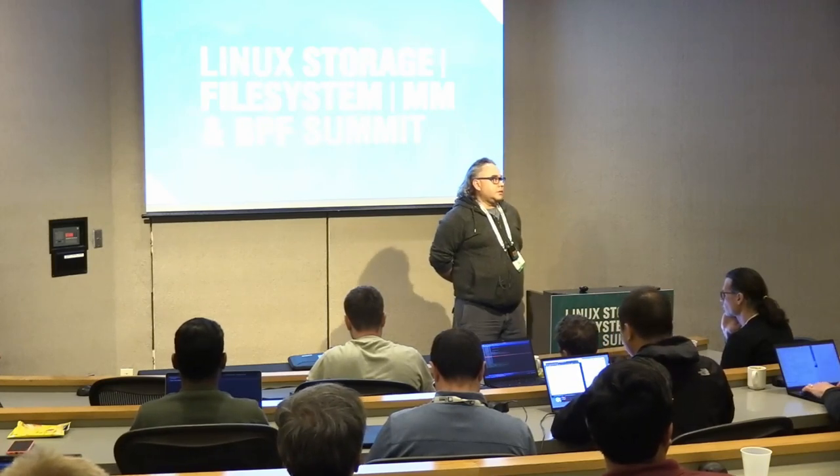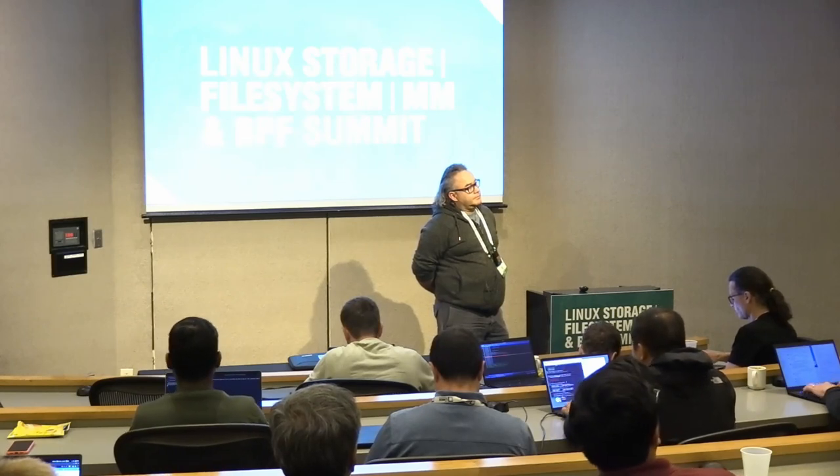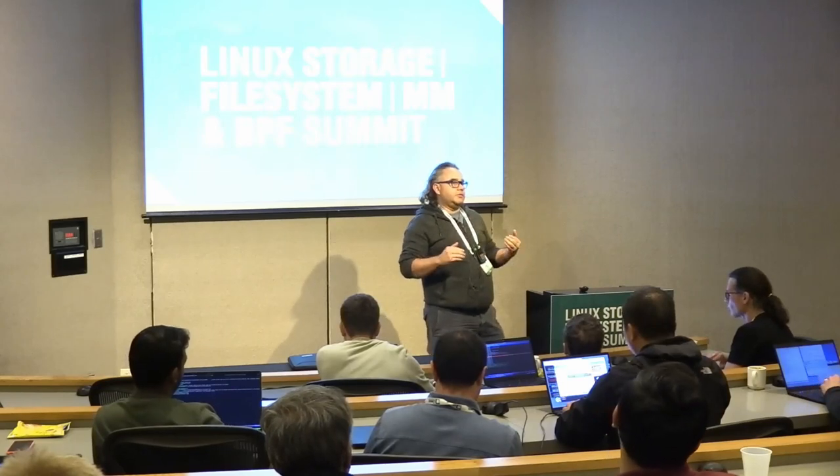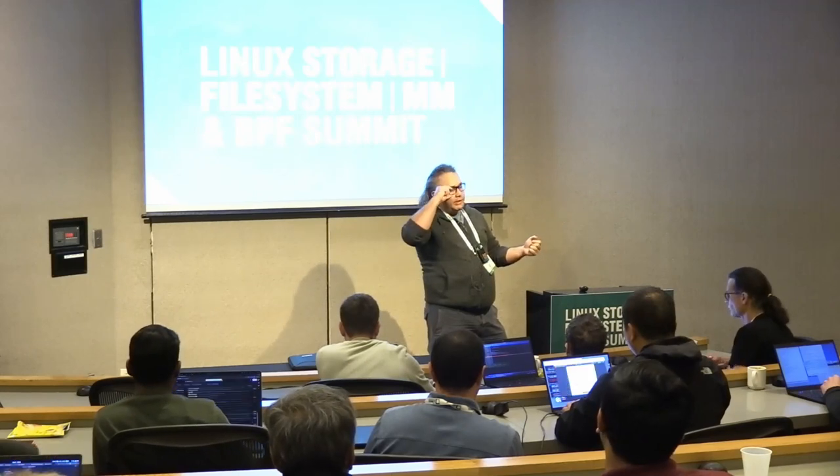I'd like to get back to the distinction between reactiveness versus proactiveness. When we start failing certain allocations, it's already too late. Does proactive compaction signal something? The system will most likely be fragmented to some degree — the question is what threshold should you care about? We don't know the full extent of this as a real-world issue yet because we don't have LBS patches merged, so we don't know what the world will look like in the near future.